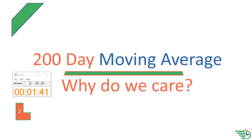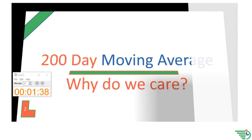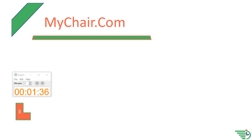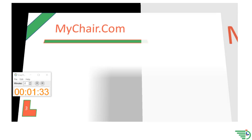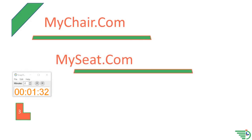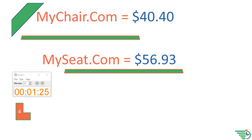So the first question you might be asking yourself is, why do we care? Well, let's say you have two companies that you're looking to invest in. We're going to call them MyChair.com and MySeat.com. You want to figure out which company is trending upward so that you can buy that stock. MyChair.com has a stock price of $40.40 and MySeat.com has a stock price of $56.93.